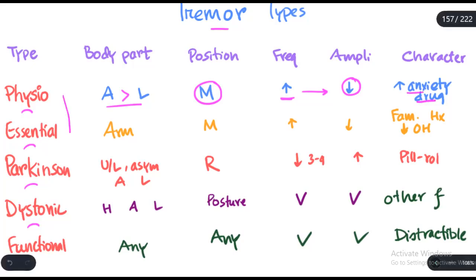Essential tremor has features almost similar to the physiologic tremor, but essential tremor commonly involves the arm and the head. The difference between physiologic tremor and essential tremor is presence of family history and reduction of the tremor by using alcohol. Those two will help to differentiate between essential tremor and physiologic tremor.